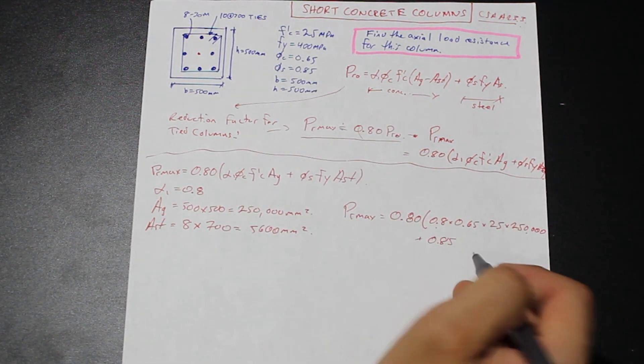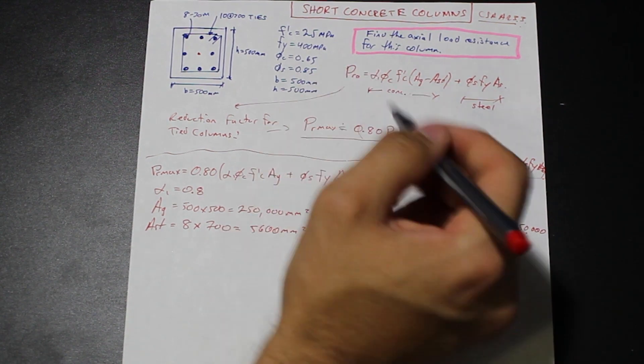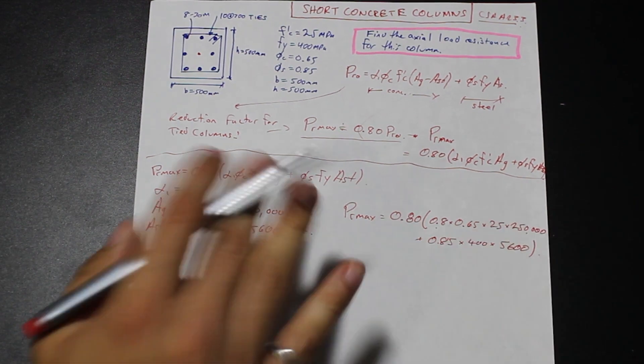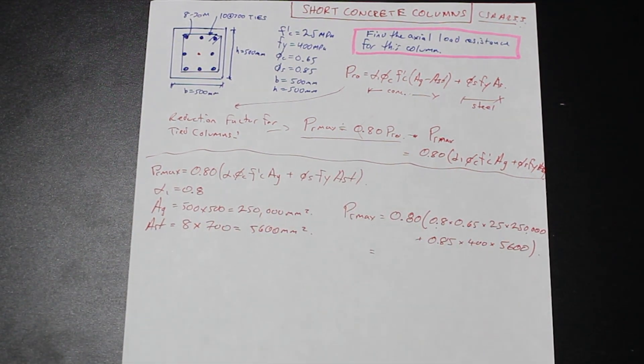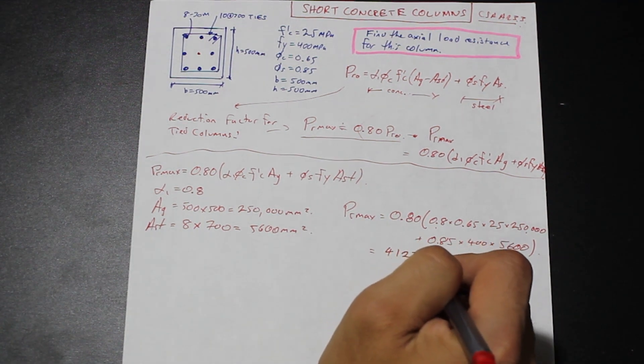f_y, which is 400, and AST, area of steel. So area of steel is 5600 mm squared. And if we calculate that, we're going to get the axial resistance of our column is equal to 4123 kN. Pretty simple. So that's how we calculate the axial resistance of our column.